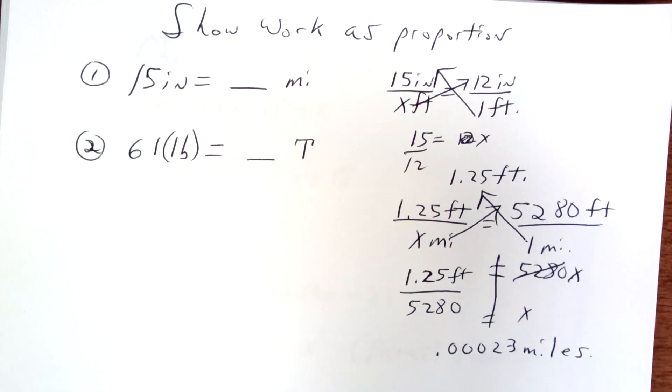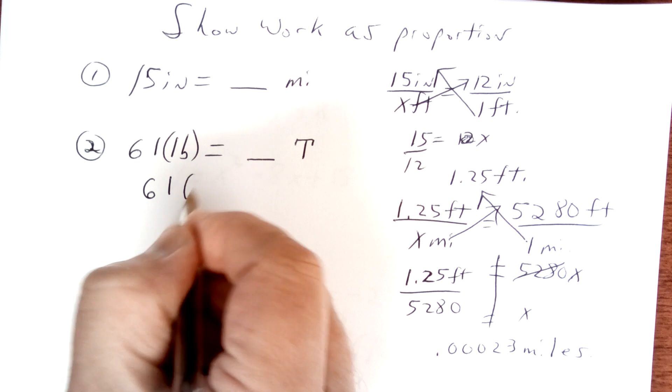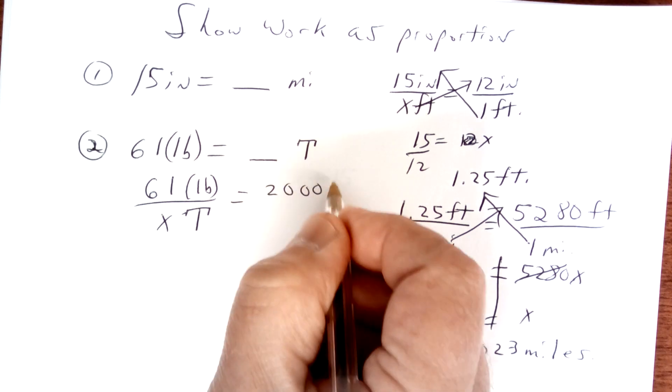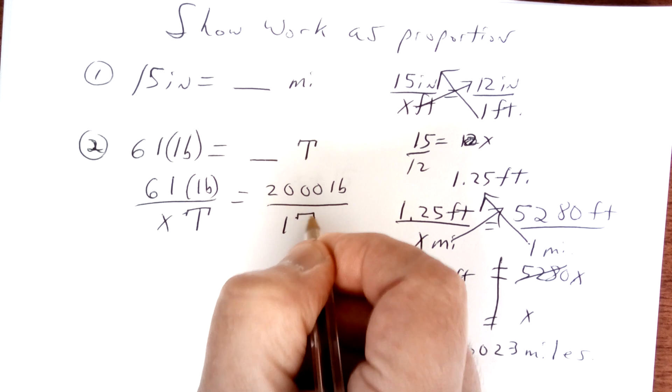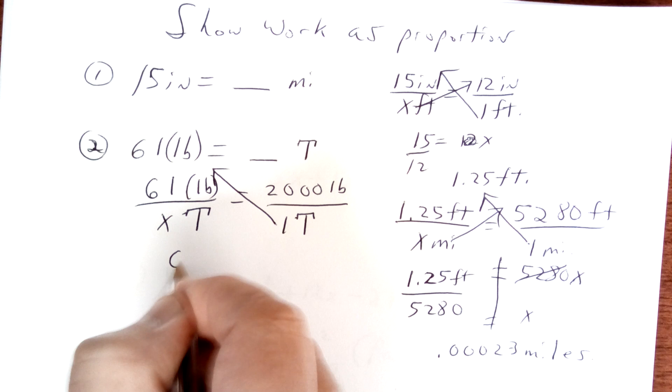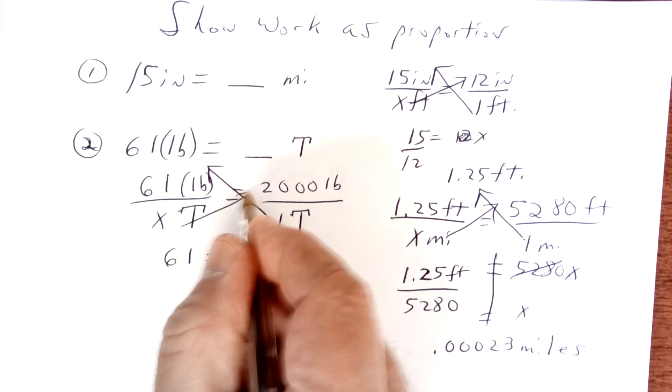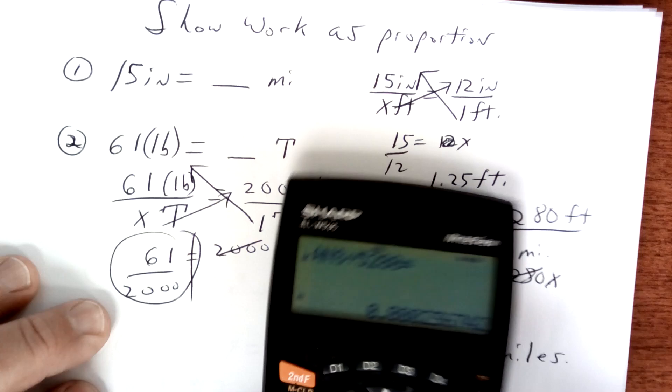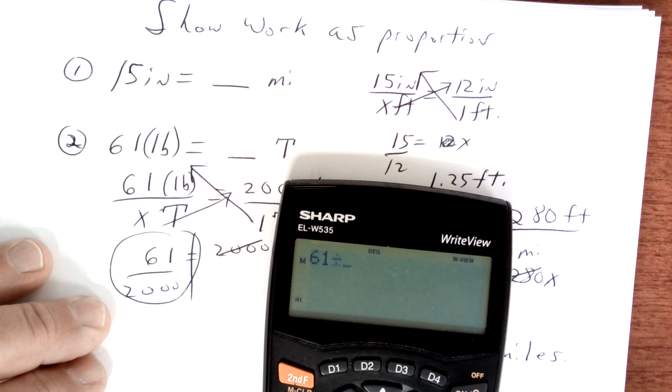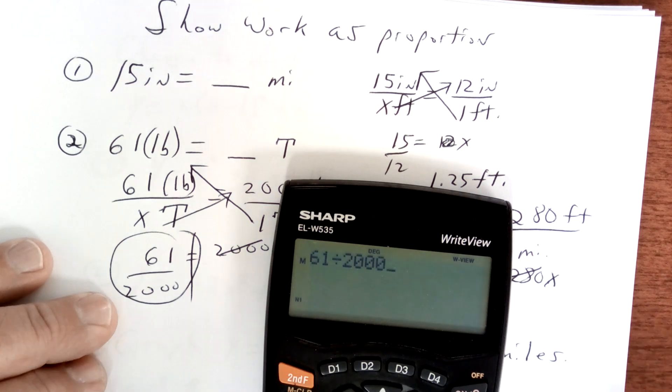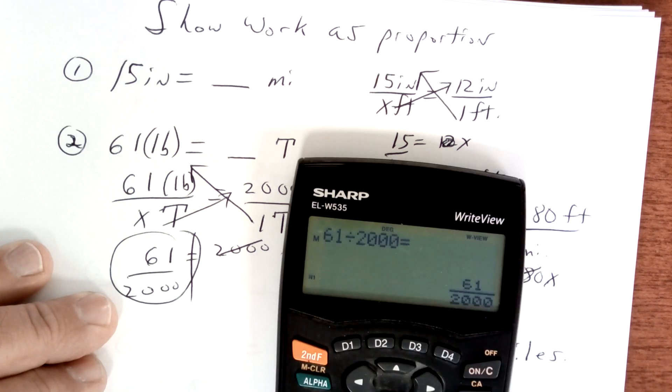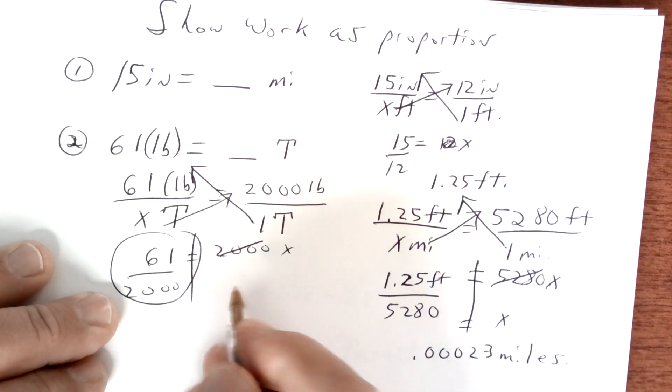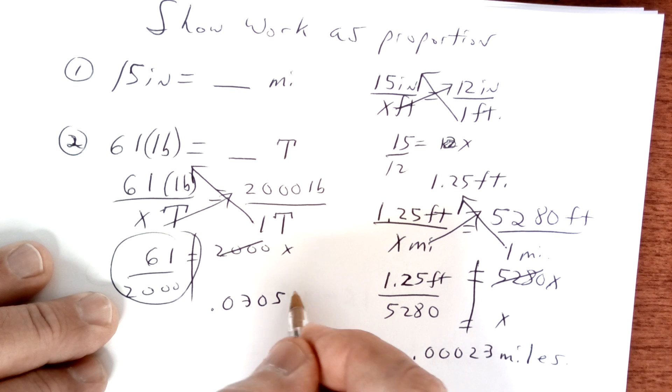On this one right here, 61 pounds equals how many tons? We know that there's 2,000 pounds in one ton. So you cross multiply. So this is going to be 61 is equal to 2,000x. Divide by 2,000 and you get your answer. So 61, and I have calculators up here, divided by 2,000 equals 0.0305 tons.